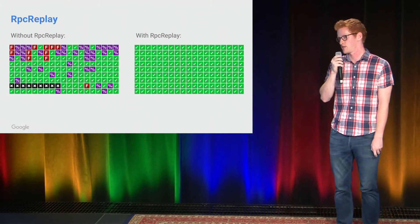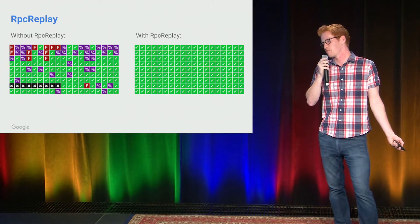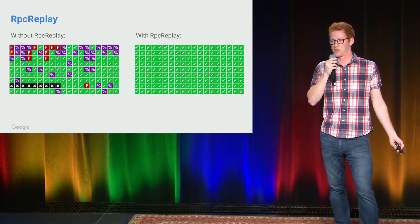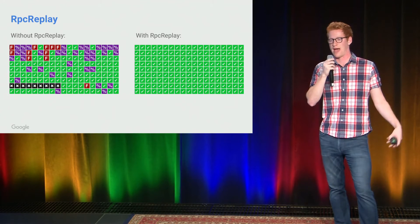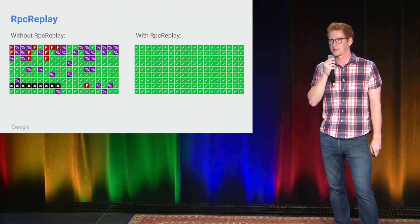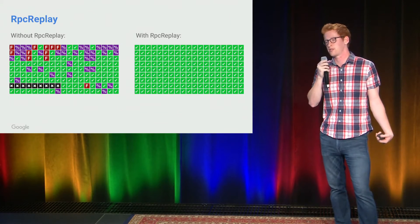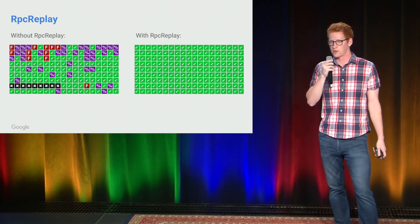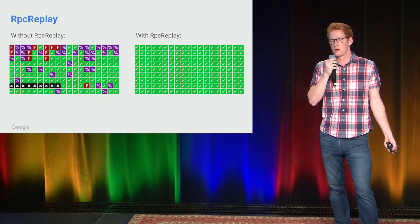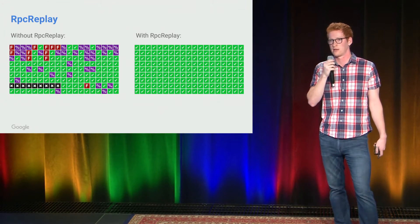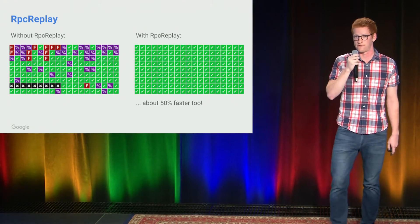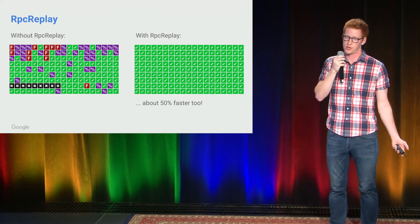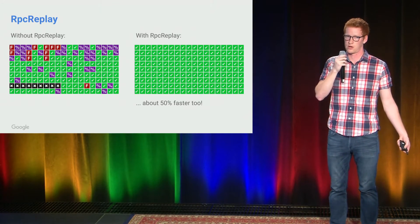Here's an example test history — red is failure, purple is where it both passes and fails at the same change, and black is a compile error. With RPC replay, we actually don't see any of those flakes, and more importantly, we don't see the compile break in the backend. That's a huge win, because when you're iterating on your team you don't want to be stopped because a backend checked in a bad CL. As a bonus, the tests are faster too, which speeds up your iteration time and enables you to submit more code and write more features.